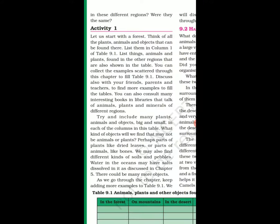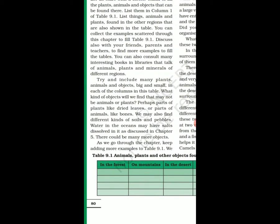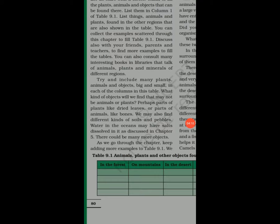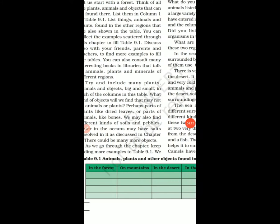Similarly, for the mountains, the desert, and the sea — list out all the kinds of animals and plants you can find in table 9.1. This is your homework. You have to complete this list in the textbook itself.